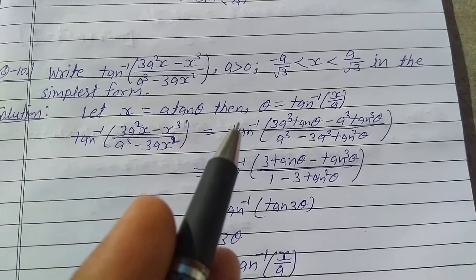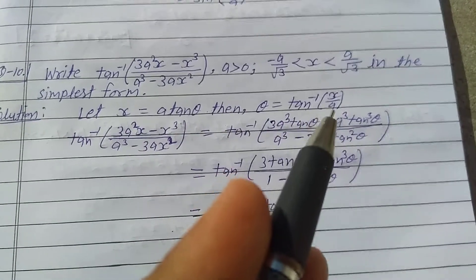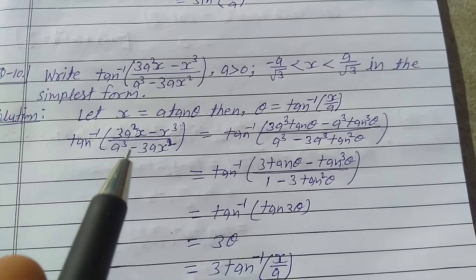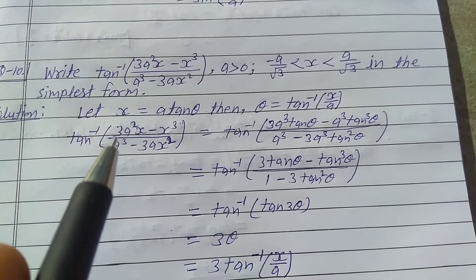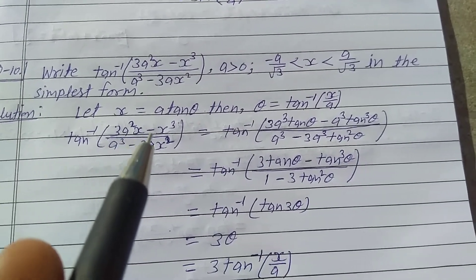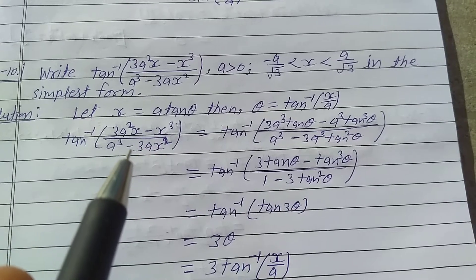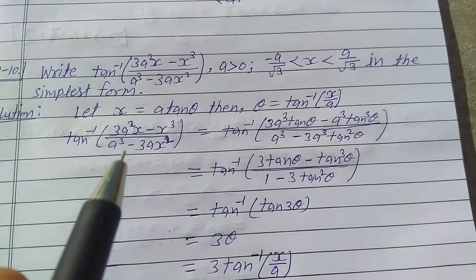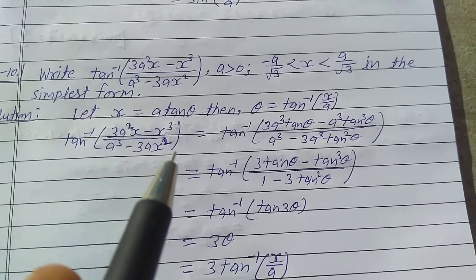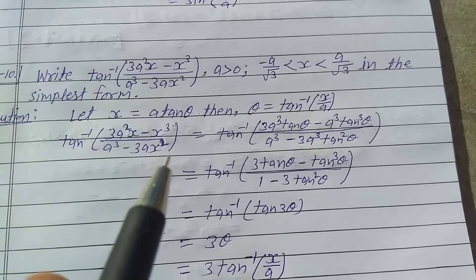Solution: Let x be equal to a·tan(θ), then θ is equal to tan⁻¹(x/a). Take tan⁻¹ of (3a²x minus x³) upon (a³ minus 3ax²), and put x equal to a·tan(θ).